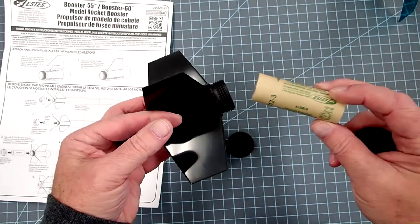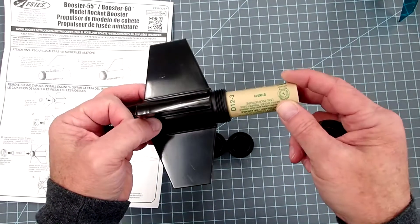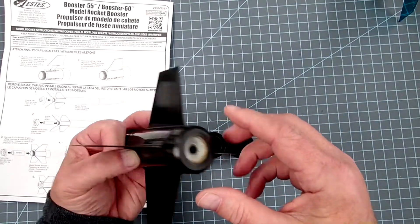This is a spent casing. This is not what you would use. You'd want a D12-0, not a D12 anything with an ejection charge. Okay, but that retains there.